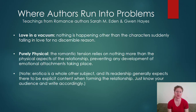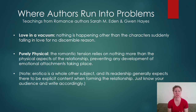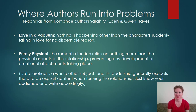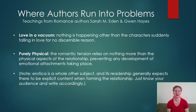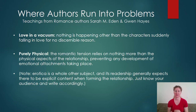Here's where authors run into problems. These are things I noticed and learned from Sarah M. Eden and also from Gwen Hayes, who is an editor and a romance novelist. She's helped a lot of other romance authors onto New York Times bestselling lists. The first issue is love in a vacuum — nothing is happening other than the characters suddenly falling in love for no discernible reason. There's no growth. The characters meet each other, it's insta-attraction, insta-lust, and then suddenly they're in love. It's purely physical, which is another issue. The romantic tension relies on nothing more than the physical aspects of the relationship, which prevents any development of emotional attachments.